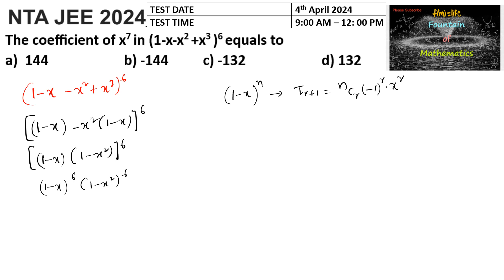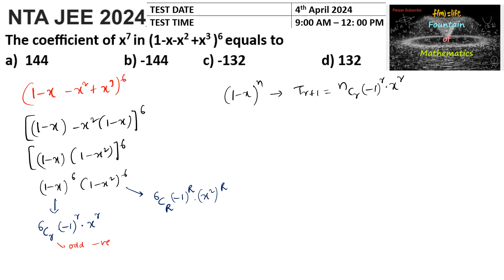So here we can write the general term for the first factor as 6Cr times (minus 1)^r times x^r, and for the second factor as 6CR times (minus 1)^R times x squared to the power R, giving x to the power 2R. Whenever r is odd you get negative, and whenever r is even you get positive, and the same applies here.